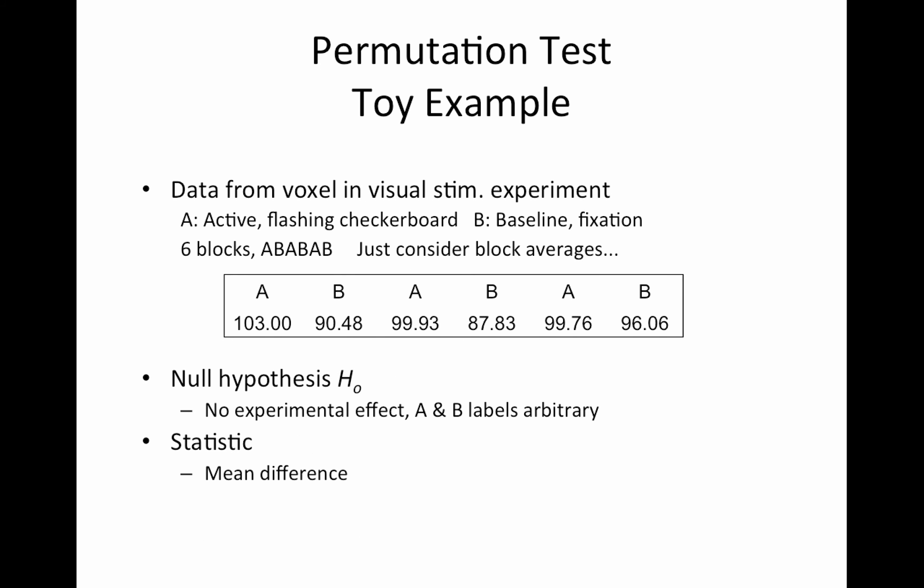So how do we permute the data? So I'm going to use this toy example. We have data from a voxel in a visual stimulus experiment where there's a flashing checkerboard that's task A versus baseline and just a fixation cross which is task B. So we have six blocks of this task in this order A B A B A B. And let's pretend we're analyzing our data in kind of a weird way, you wouldn't do this in practice, this is just to illustrate the permutation test, but we just took an average within each block and use that as our activation estimate. So brain activation is 103 for the first A, it's 90 for the first B, 99.93, and so on. So these are the activation magnitudes for our blocks.